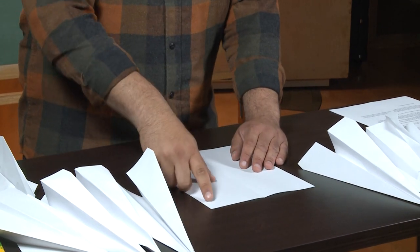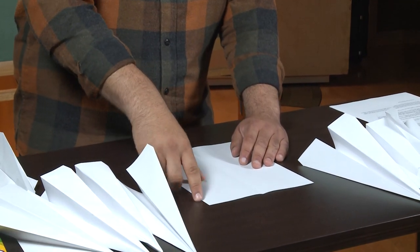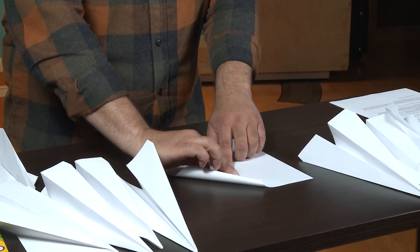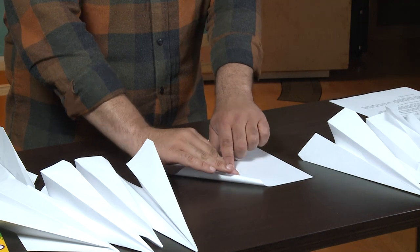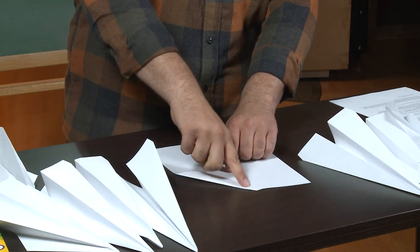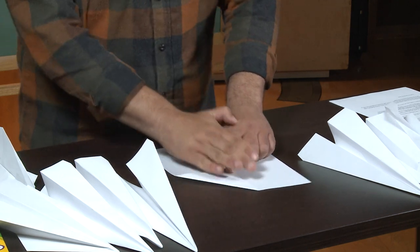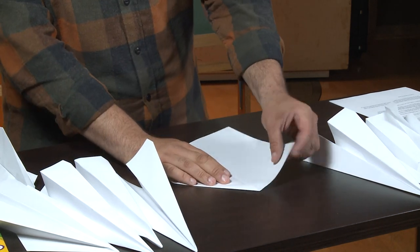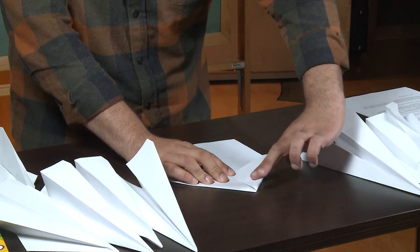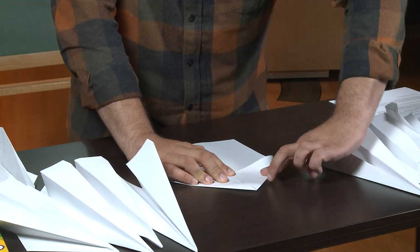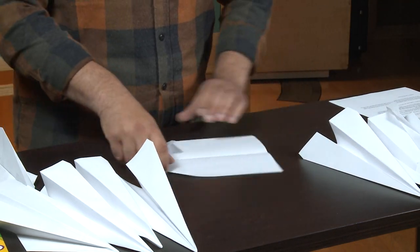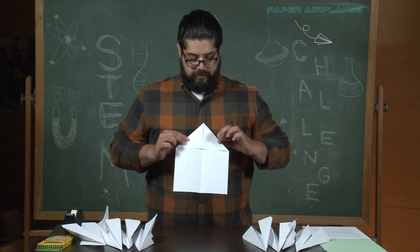So from there, you are going to take one corner of your sheet and fold it right to the middle seam. And what that's going to do is it's going to create kind of a triangle, as you'll see here. And then you will do the same thing on the other side. So take that corner, bring it to the center, flatten it out so that there's a nice crease.